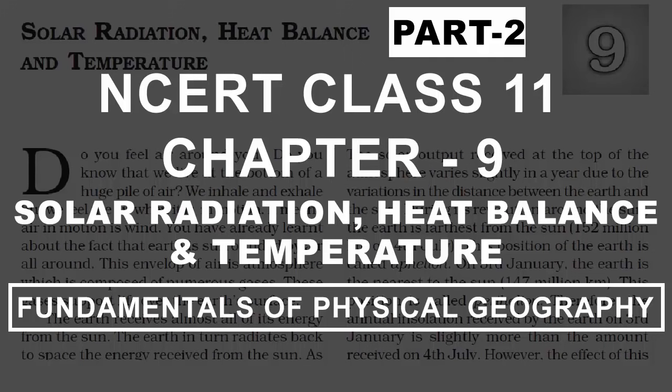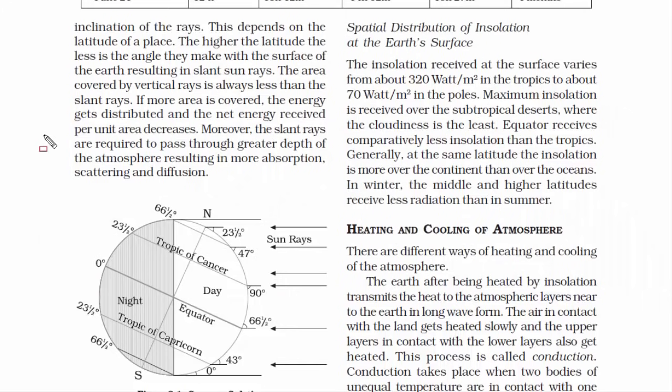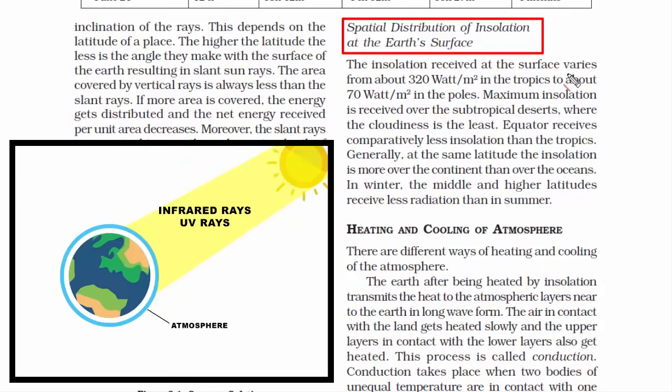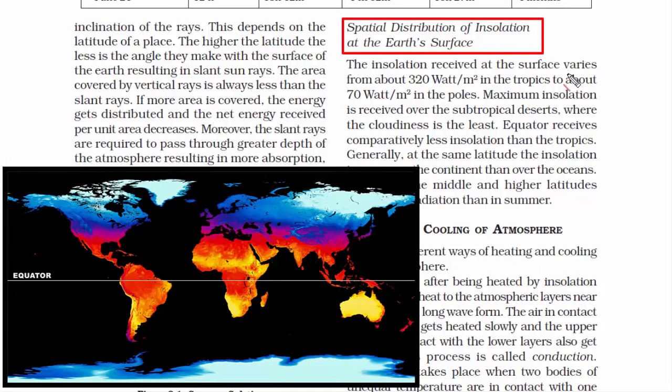This video is the second part of chapter 9, class 11th: solar radiation, heat balance, and temperature. Now let's read about the spatial distribution of insolation at the earth's surface — meaning, when the solar energy reaches the earth's surface, what is the pattern and arrangement like? How is the heat spread across different regions of earth?